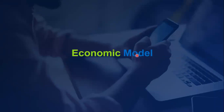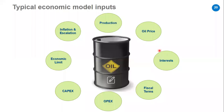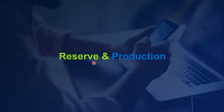Now we will go through some economic model components. Each economic model is composed of eight components: production forecast, oil price, interest, fiscal terms, OPEX, CAPEX, economic limit, and escalation/inflation. A typical economic model integrates all of these components together to derive indicators and to calculate the net present value. We will go through each component now.